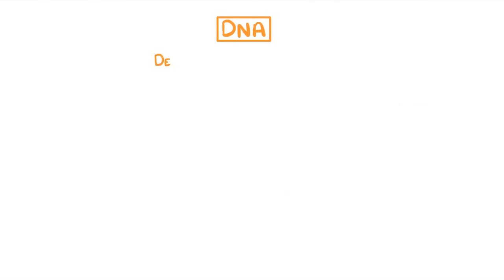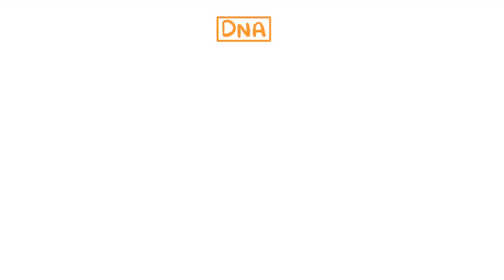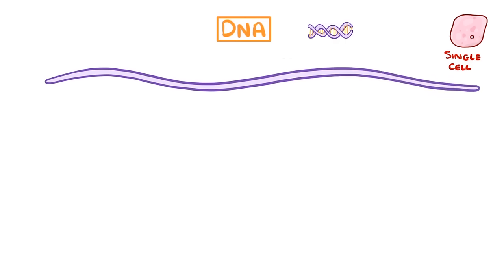DNA stands for deoxyribonucleic acid and it's the chemical that all of our genetic material is made of. DNA is a polymer, which means it's made up of lots of similar units stuck together, and there are actually two strands which are stuck together to form this so-called double helix, which just means that it's a double stranded spiral. Now if you were to take all of the DNA out of a single cell and you unraveled it into one long strand, then that strand would be over two meters long.